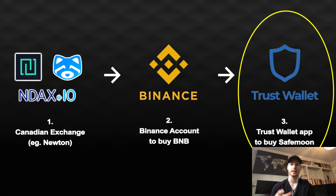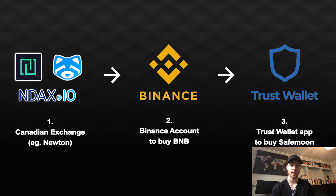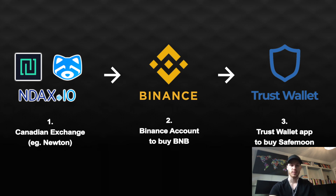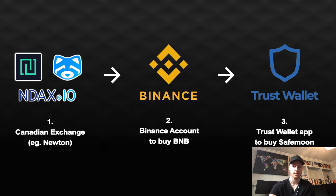The last step inside the Trust Wallet is where we'll actually buy SafeMoon. The reason we need the other apps is that to buy SafeMoon we have to deposit BNB, and we have to buy BNB somewhere — that's why we need a Binance account. To do that, we need crypto in our Binance account, which is why we need a Canadian exchange to buy crypto and send it to Binance. It's a few steps, but steps two and three are really quick to set up. The longest part is step one if you don't have a Canadian exchange yet, because you'll have to open an account and go through the verification process.